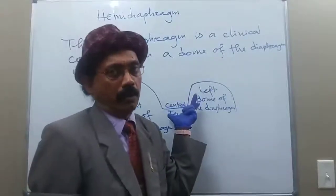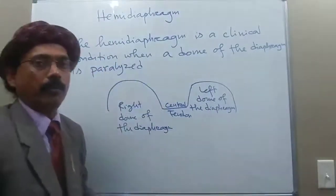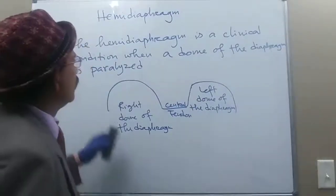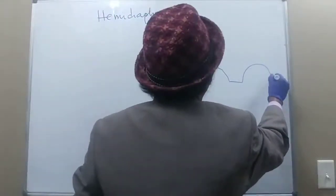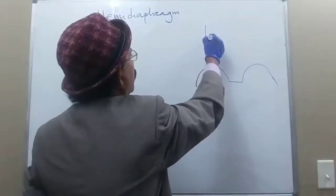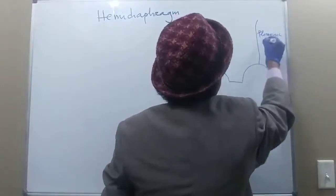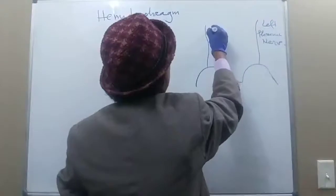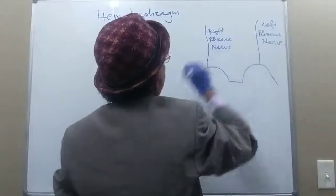The diaphragm is the chief muscle of respiration, especially for inspiration. So one-sided paralysis is called hemidiaphragm, and people may survive with one-sided dome of the diaphragm. Each dome is supplied by a phrenic nerve — this is the left phrenic nerve and this is the right phrenic nerve.